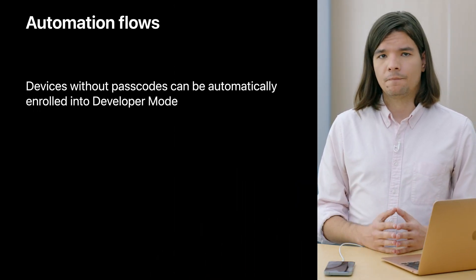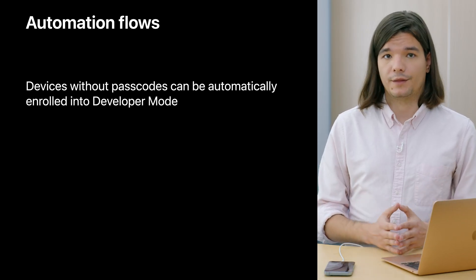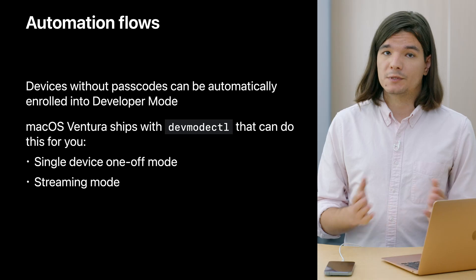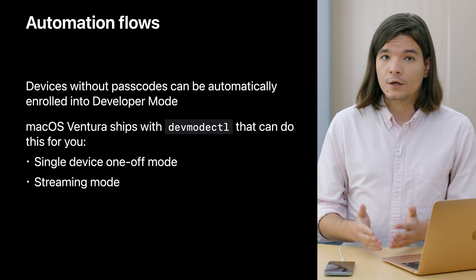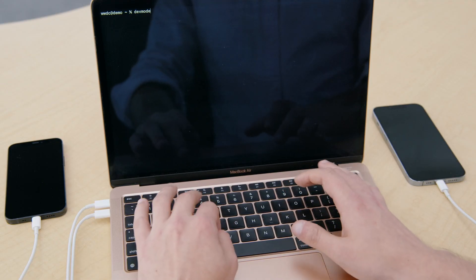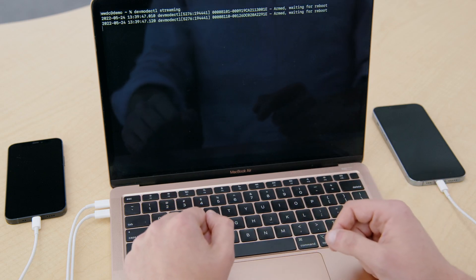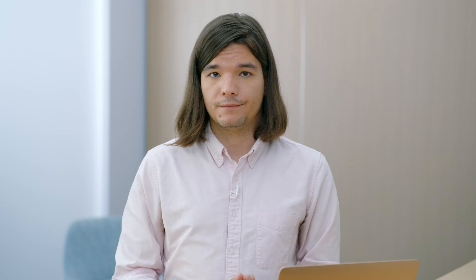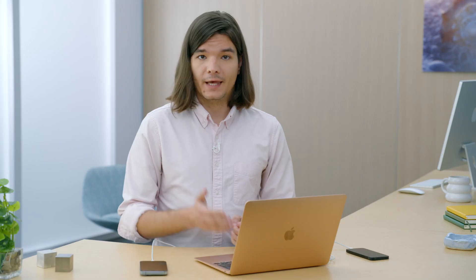While this flow works when you're working with a single device, this process can be time-consuming if you're dealing with multiple devices. For this reason, we've built tools to help you automate this process. Automation flows have one limitation: only devices without a passcode can have developer mode automatically enabled. This is because when you restart your iPhone, you need to unlock your device before your device can be interacted with. To support automation, macOS Ventura ships with devmodectl that you can use to either enable developer mode on a single device that you have already connected, or in streaming mode that will automatically turn on developer mode on all devices that you plug in. Here, I have two devices plugged into my Mac. They don't have passcodes and I don't want to manually set up developer mode on them. So, I'm going to run devmodectl with the streaming subcommand. This will automatically reboot the connected devices and set up developer mode. Once developer mode has been set up, you will get a notification on the device. And now these devices are good to go.